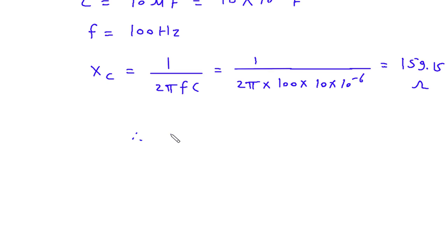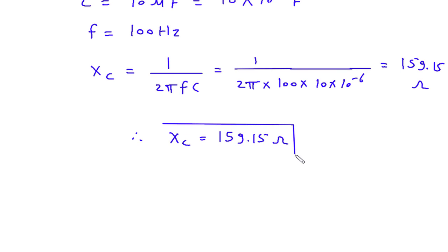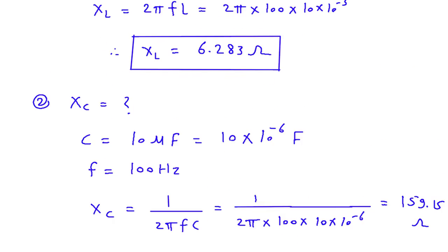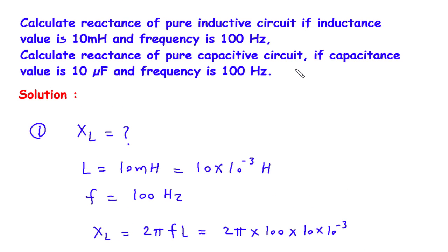Therefore, XC is equal to 159.15 Ohm. This is the value of capacitive reactance, and 6.283 Ohm is the value of inductive reactance. If you find this video helpful, then feel free to donate whatever amount you can. Link is in the description below. Thank you.